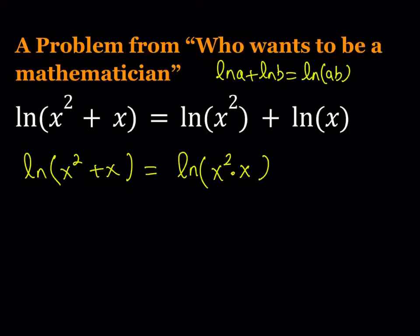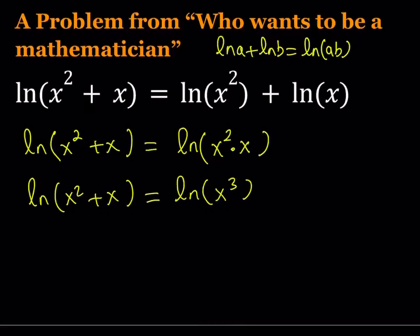What am I getting from here? Well, I'm getting a product, so that kind of looks like I can multiply them. This gives me ln(x² + x) = ln(x³), because x² times x is equal to x³. What can I do next? Well, forget about the ln's.